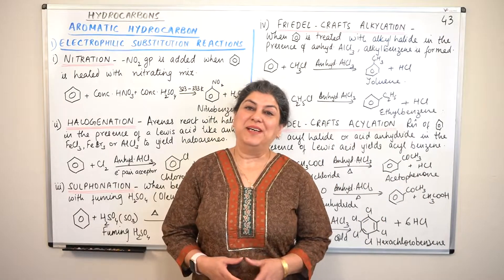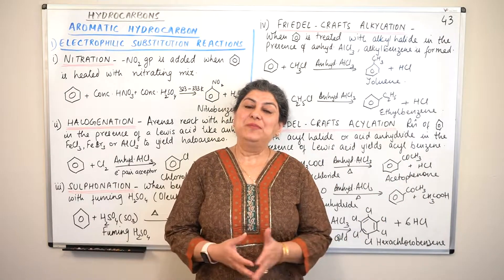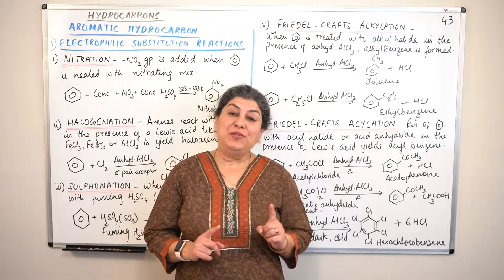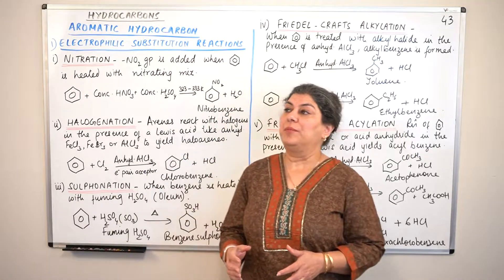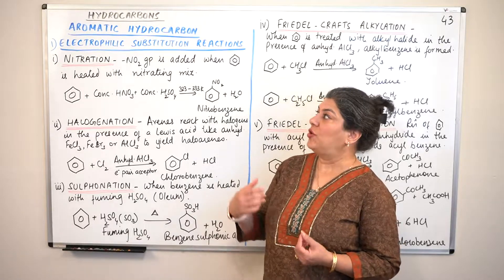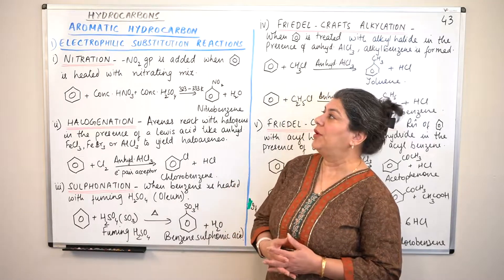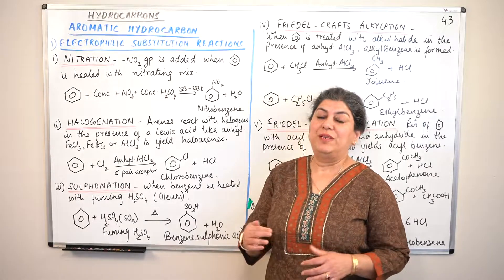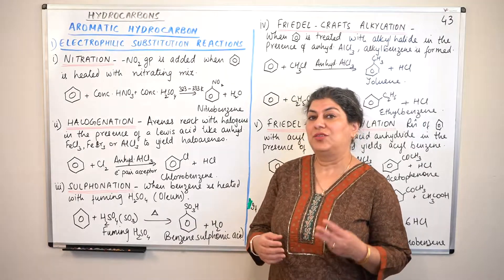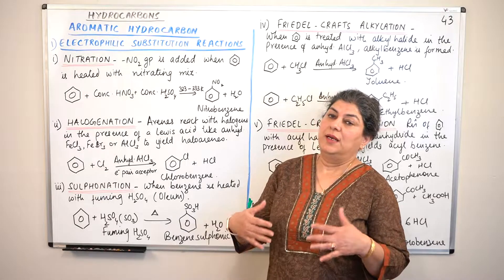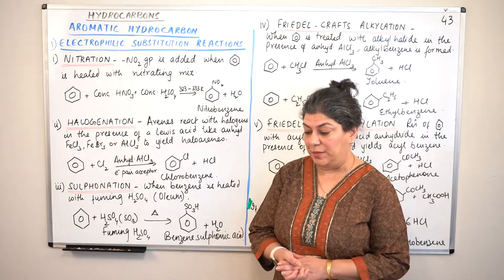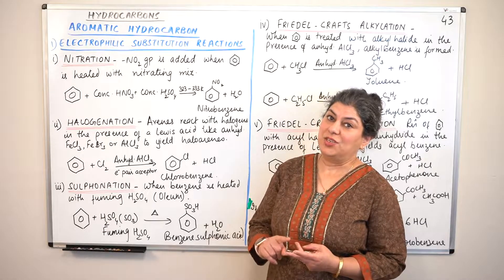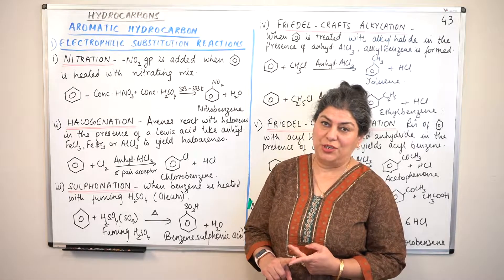Hello, I'm Seema and welcome to part 43 of the chapter Hydrocarbons. In part 42 we started talking about the physical and chemical properties of aromatic hydrocarbons. There are three main chemical properties: the first is electrophilic substitution, the second is addition reactions, and the third is oxidation.